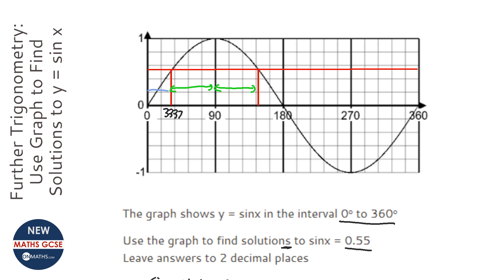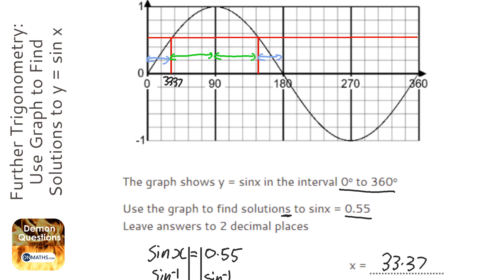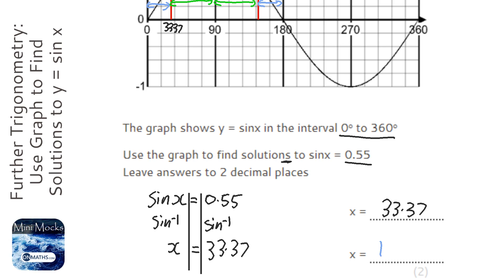or an easier way is just use symmetry for these two, the fact that these two will be equal. So what I'm going to do is I'm going to type in 180, take away our answer, which gives me the answer of 100, oh, see what's set to blue, 146.63